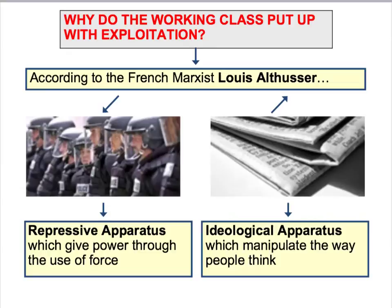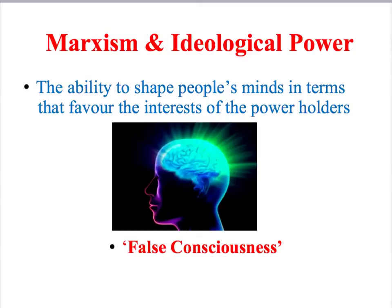Given that workers receive only a tiny fraction of what their labour power is really worth, the next question for Marxists is why do the working class put up with this exploitation? According to the French Marxist Louis Althusser, there are two main reasons. Firstly, because the bourgeoisie control the political system, they control what he calls the repressive state apparatus — things like the police, the courts, the army — which can be used to control workers in times of conflict and social unrest. More importantly, Althusser argues that the bourgeoisie control the working class through their control of the ideological apparatus — the ability to shape people's minds through control of things like the media in terms that favour the interests of that particular group.